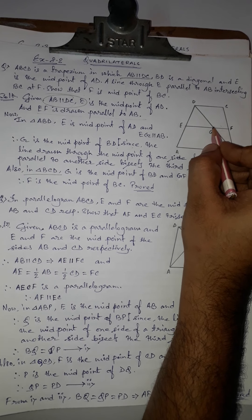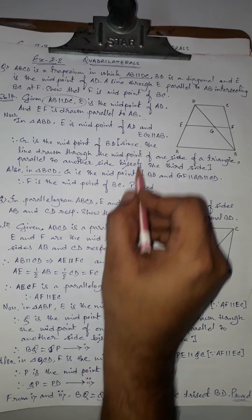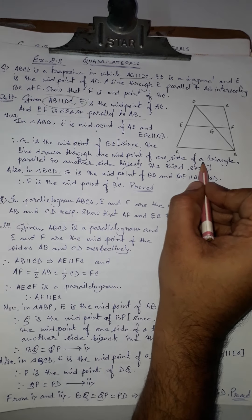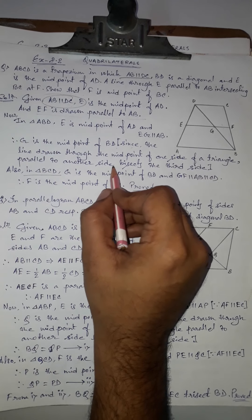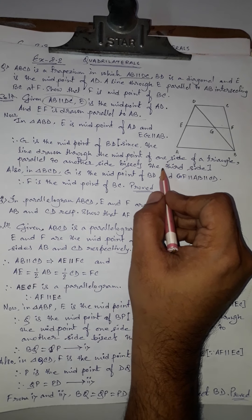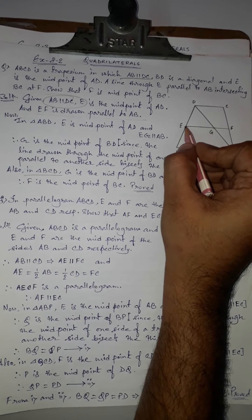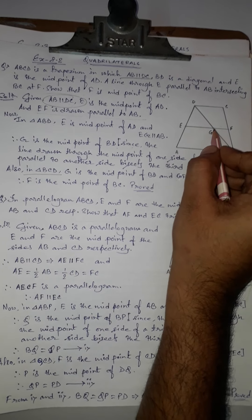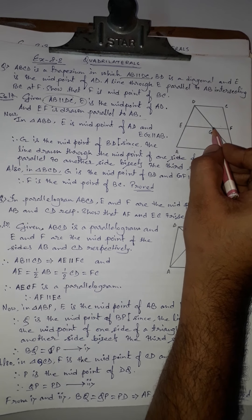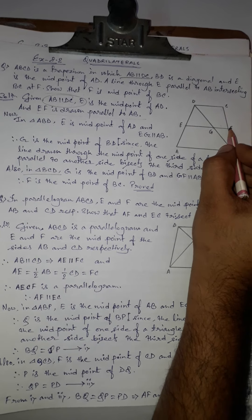Since G is the midpoint of BD and GF is parallel to CD, F must be the midpoint of BC — by the same converse of the midpoint theorem: a line through the midpoint of one side parallel to another side bisects the third side. Hence F is the midpoint of BC.